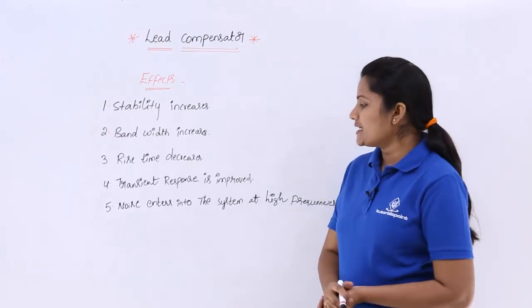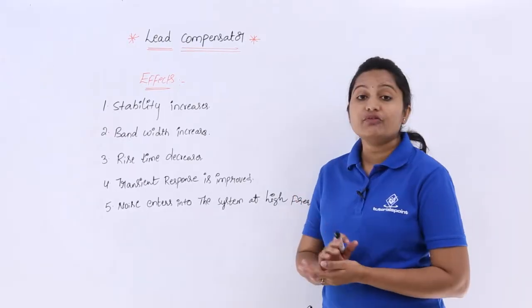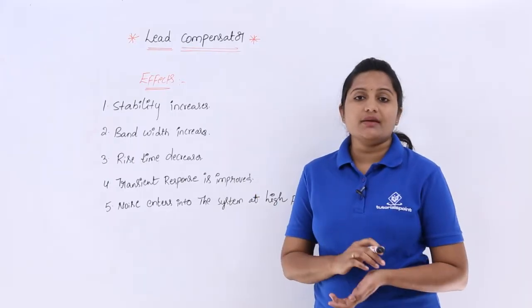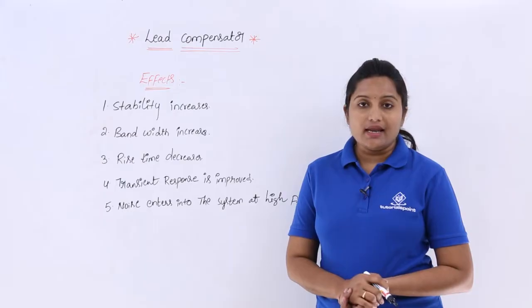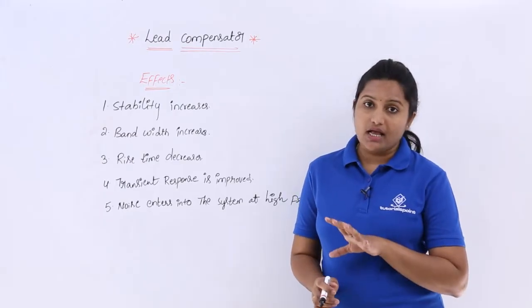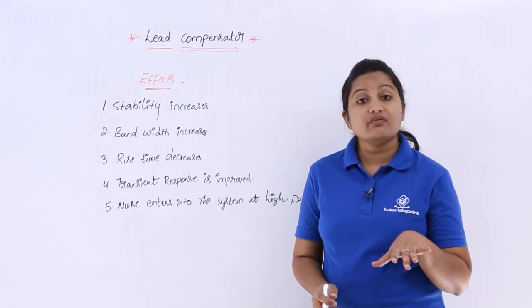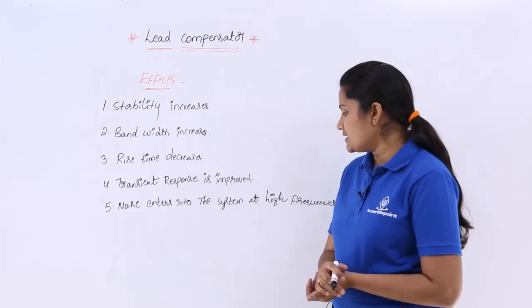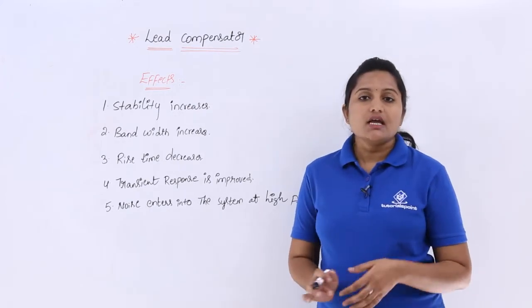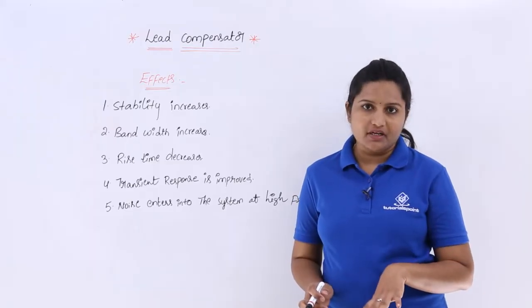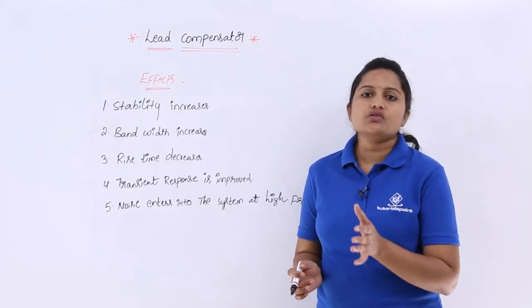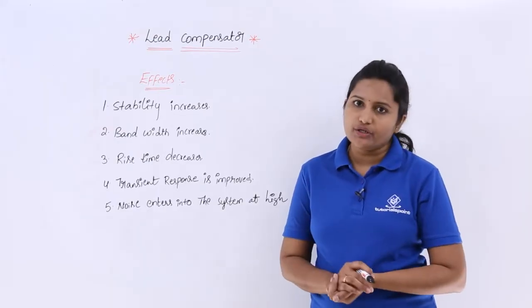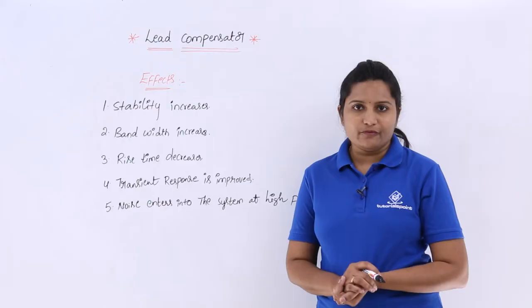Here noise enters into the system at high frequencies because it is a type of high pass filter network. It will allow high frequencies, high frequency noise also sometimes. If noise is also in high frequency, as this system allows high frequencies, those noise signals are also going to enter at high frequencies.